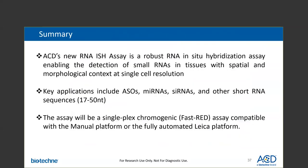To summarize today's topic, our new RNA ISH assay is a robust RNA in situ hybridization assay enabling the detection of small RNAs in tissues with spatial and morphological context at single-cell resolution. Key applications include ASOs, microRNAs, siRNAs, and other short RNA sequences 17 to 50 nucleotides in length. The new assay will be a single-plex chromogenic fast red assay compatible with the manual platform or the fully automated Leica platform.